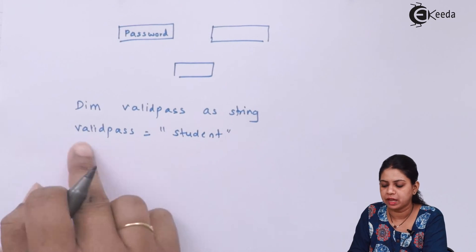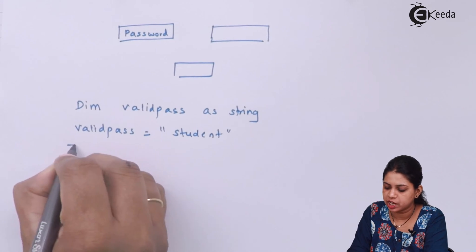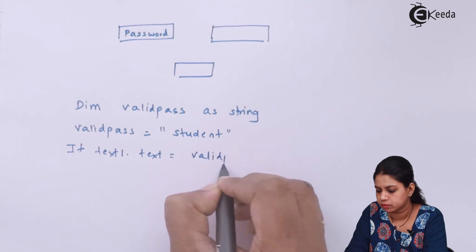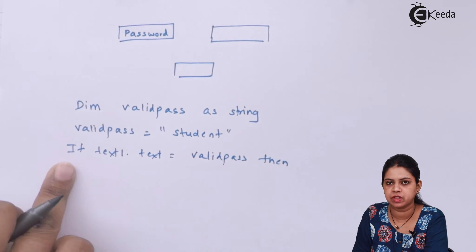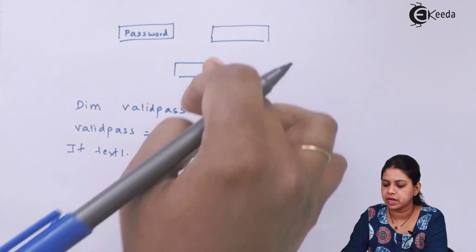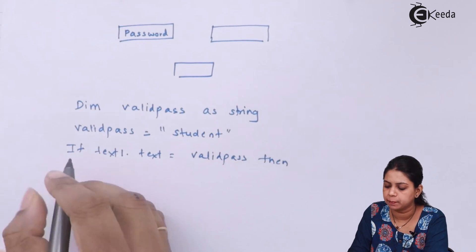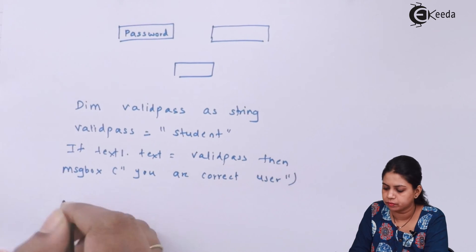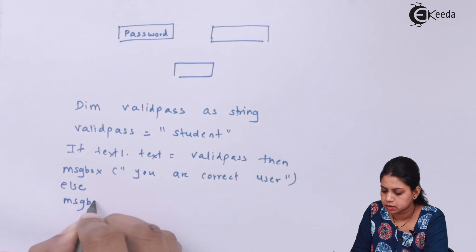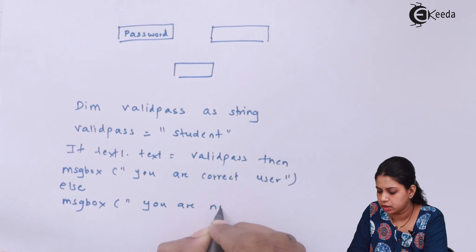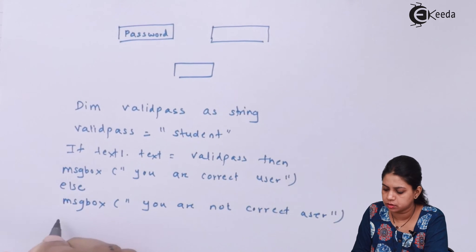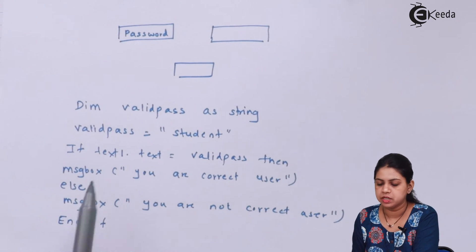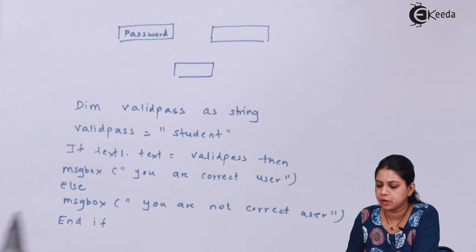Now check: If Text1.Text equals validPass Then MsgBox 'You are a correct user' Else MsgBox 'You are not a correct user' End If. So if the value entered in Text1 matches validPass, which is 'student', you get the correct user message; otherwise the incorrect user message.